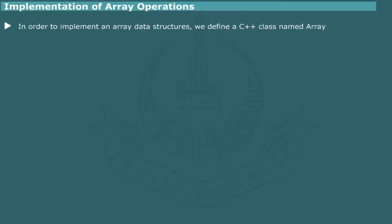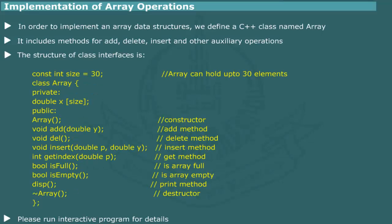Implementation of array operations. In order to implement the basic operations on array, we define a C++ class named array which includes add, delete, insert and other auxiliary functions. The structure of class interfaces is shown. Add appends a new element. Delete removes an existing element. Insert adds a new element in a given position. GetIndex returns the index of a specified array element. IsEmpty checks if array is empty and returns false or true. IsFull checks if array is full and return false or true. This method prints the contents of the array x. The detailed coding of all methods is given in the demonstration to follow.